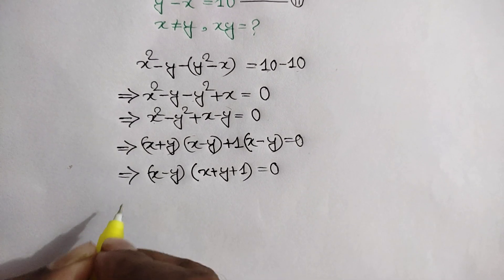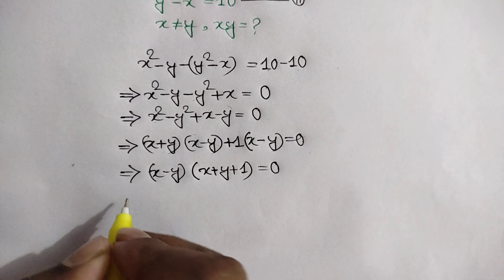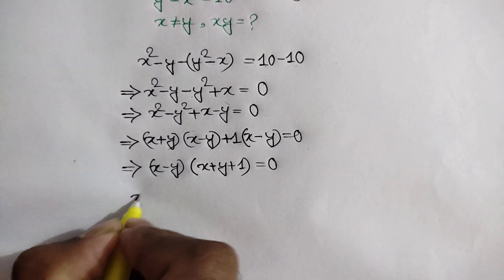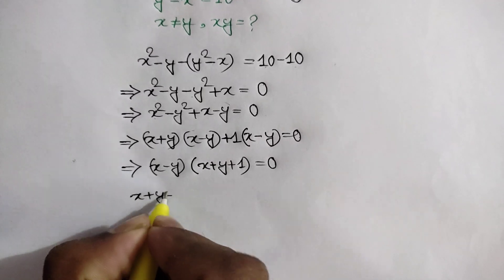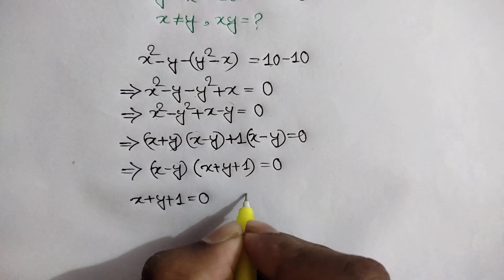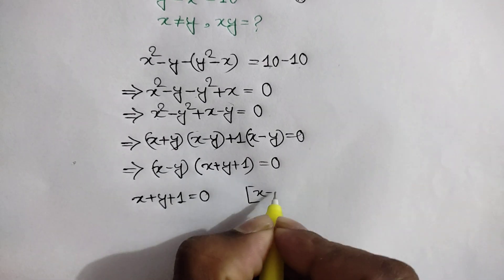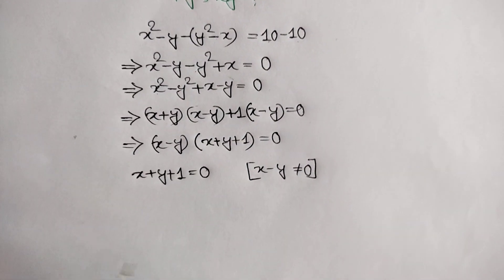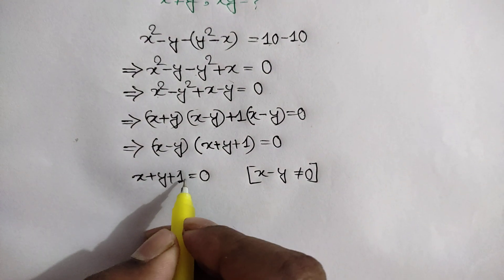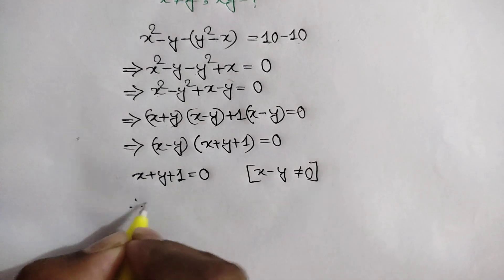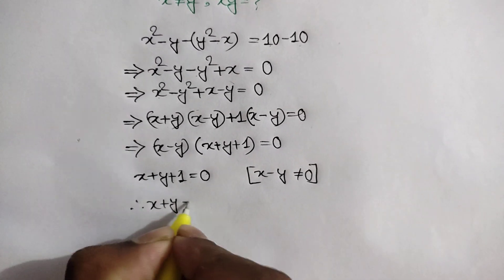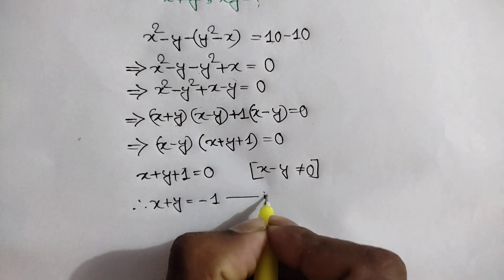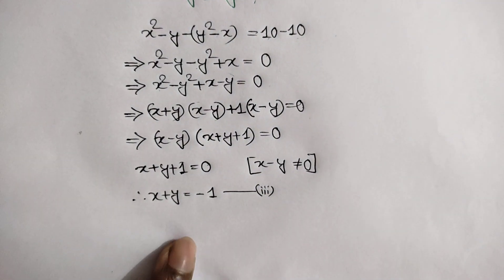As x is not equal to y, x minus y is not equal to 0. So we will have x plus y plus 1 equal to 0. Taking 1 to the right side, we can write x plus y is equal to minus 1. Call it equation number 3.